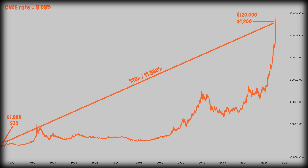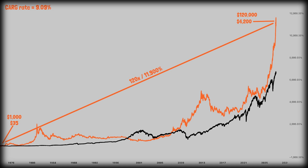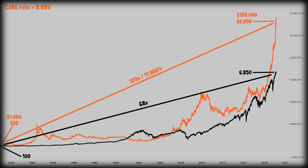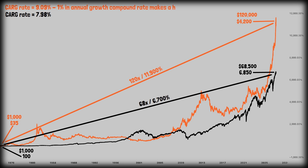Now let's take a look at the S&P 500. In early 1971, the S&P 500 was at 100 points. 55 years later, it is at 6,850 points — a 68x or 6,700% increase, with a compound annual growth rate of 7.98%. Investing $1,000 into the S&P 500 55 years ago would now be worth $68,000. So as we can see, that 1% difference in annual compound growth rate makes a huge difference.